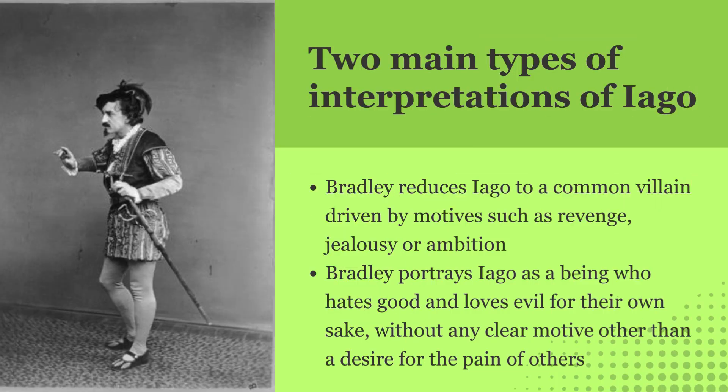Bradley identifies two main types of interpretations of Iago. The first reduces Iago to a common villain driven by motives such as revenge, jealousy, or ambition. These interpretations, according to him, fail to capture the complexity of Iago's character. The second portrays Iago as a being who hates good and loves evil for their own sake, without any clear motive other than a desire for the pain of others. This interpretation sees Iago as a symbol of pure malice, closer to Shakespeare's conception of him.